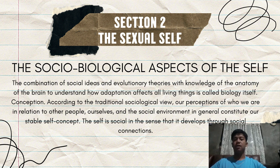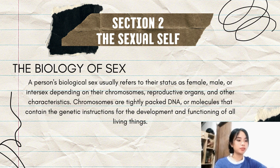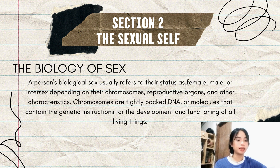The Biology of Sex refers to biological characteristics and processes that distinguish males and females within a species. In most organisms, including humans, sex is determined by genetic factors, specifically the presence of sex chromosomes. In humans, typical sex chromosomes are designated as X and Y — typical females have two X chromosomes, while males have one X and one Y chromosome. The presence of the Y chromosome triggers the development of male reproductive structures during embryonic development.